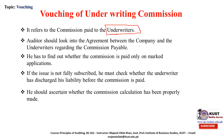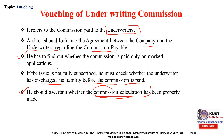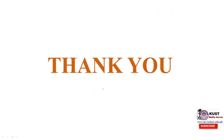The auditor should look into the agreement between the company and the underwriter regarding the commission payable, and find out whether the commission is paid only on marked applications. If the issue is not fully subscribed, the auditor must check whether the underwriter has discharged his liability before the commission is paid — meaning shares should be fully subscribed; otherwise, no commission is payable. The auditor should also ascertain whether the commission calculation has been properly made, verifying the arithmetical accuracy of the commission.